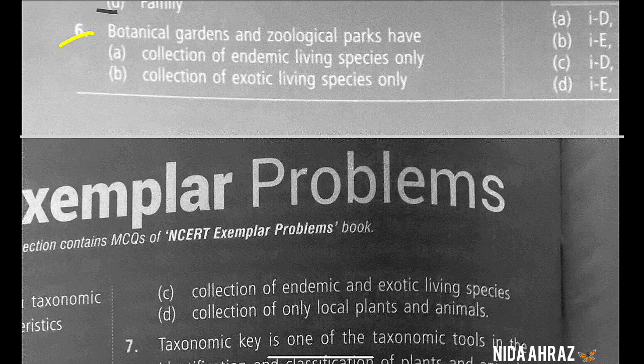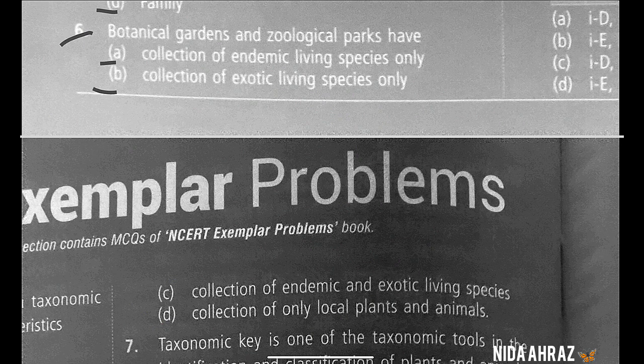Botanical gardens and zoological parks have a collection of endemic living species only, collection of endemic and exotic living species, or collection of only local plants and animals. Botanical gardens and zoological parks are specialized places where both endemic (local) and exotic (foreign) species are kept for scientific studies. The Botanical Garden at Kew, England, and the National Zoological Park, Delhi, are some famous examples. So option C is the correct choice: collection of endemic and exotic living species.